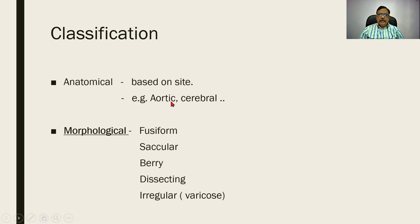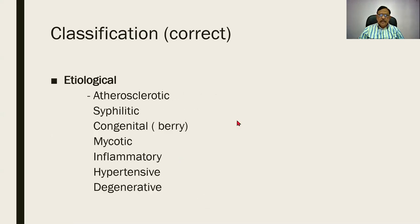Anatomically, it can be based on the artery that is affected — it can be aortic or cerebral. Morphologically, on the other hand, it is based on shape and size, according to which you have a fusiform aneurysm, a circular aneurysm, a berry aneurysm, dissecting aneurysm, and irregular or varicose aneurysm. Another way of classifying is etiological — the most important being atherosclerotic, syphilitic, congenital, mycotic, and degenerative or dissecting aneurysm.